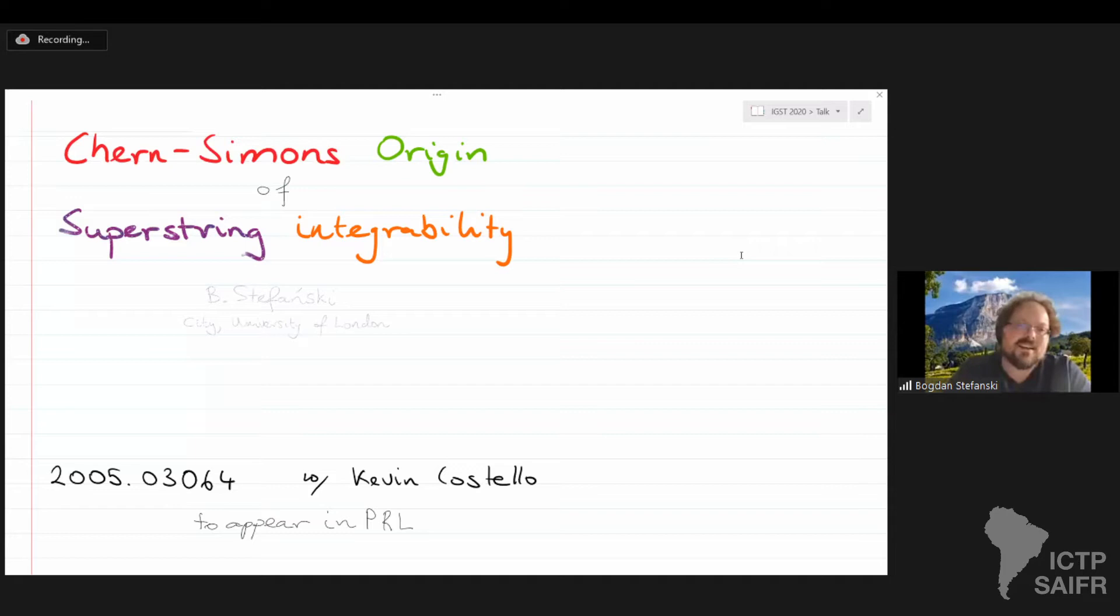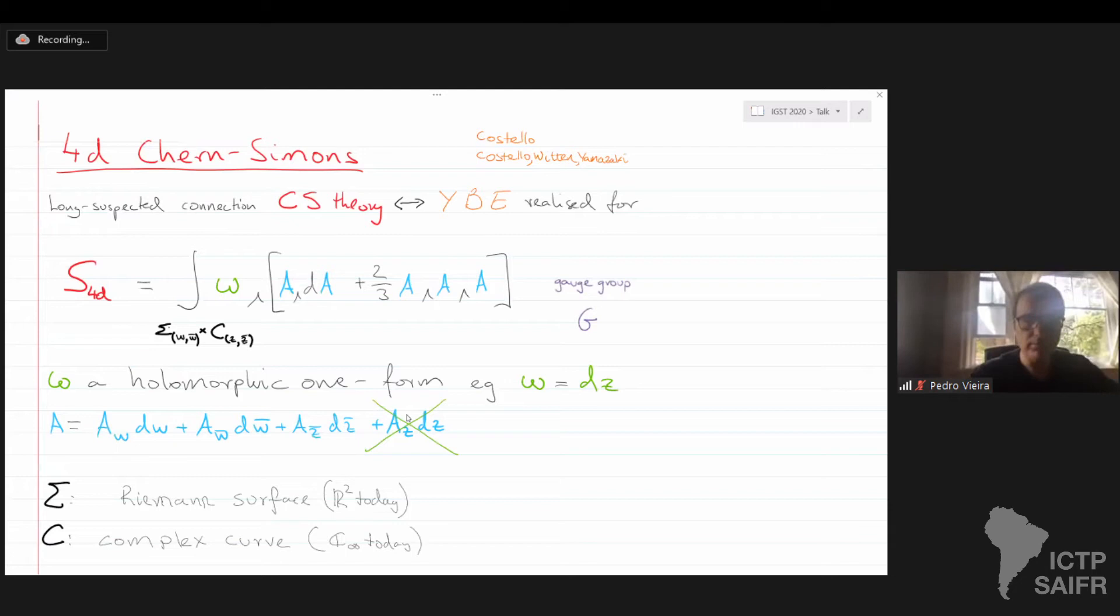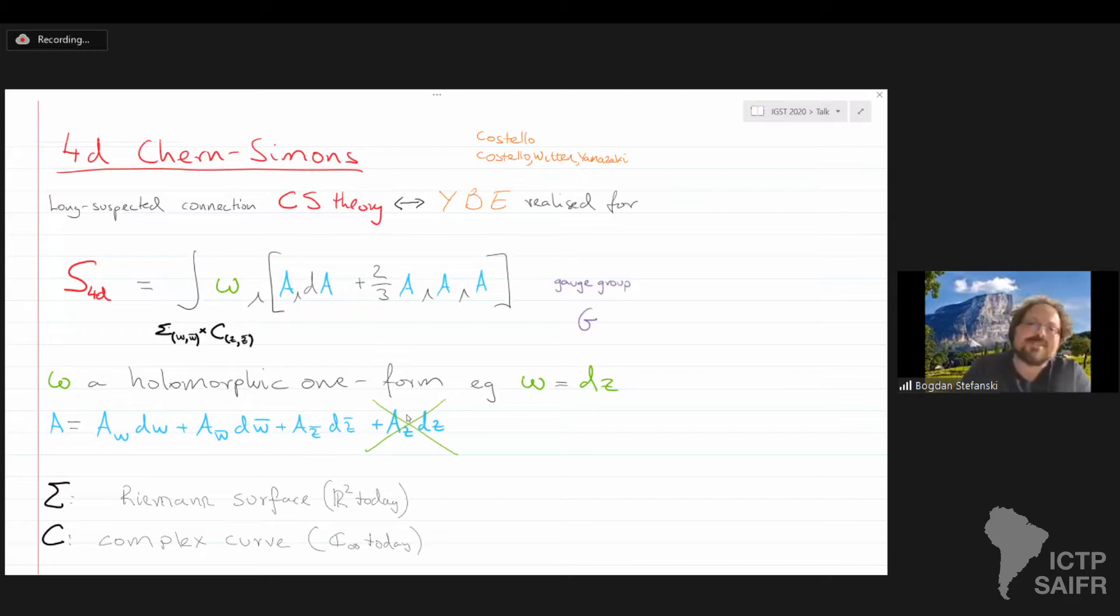So I'm going to talk about super string integrability and how we can find it by using a certain version of Chern-Simons theory. This is based on work that Kevin and I did a little while ago. So I realized when I was preparing this talk that I had two challenges. One was the 25-minute challenge, but the other challenge was that I'm not sure that the 4D Chern-Simons story has been presented at IGST before. And so I'm going to try to give you a little lightning introduction into the work that Kevin and then Costello, Witten, and Yamazaki in a series of papers have developed over the past few years, just so you get a feeling for the kind of thing that then fits into the string theory description.